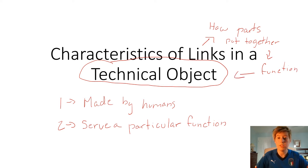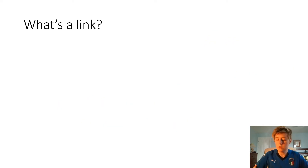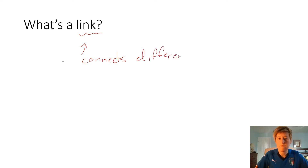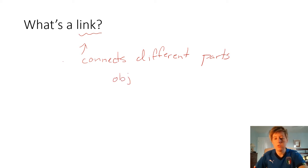So what is a link? Based on what the name says, a link is anything that has the function of putting two parts together. A link can be done by any component that connects different parts in your object.